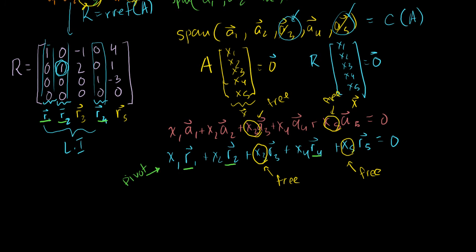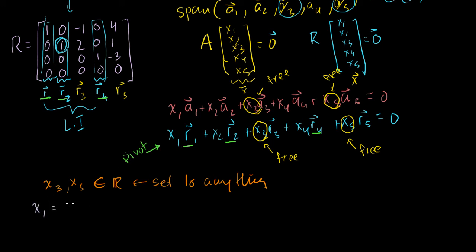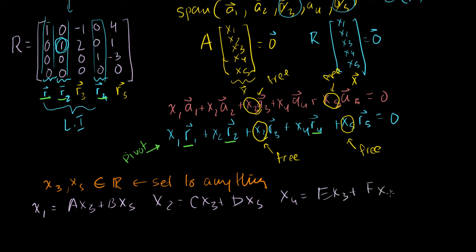The free variables can be set to any real number. From the reduced row echelon form, we can express the pivot variables as functions of the free variables: X1 = a·X3 + b·X5, X2 = c·X3 + d·X5, and X4 = e·X3 + f·X5. This comes directly from solving the system when we multiply R times the vector and set it equal to zero.